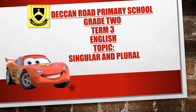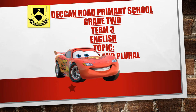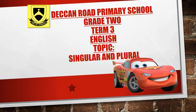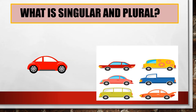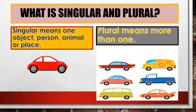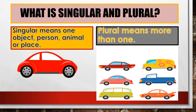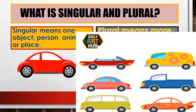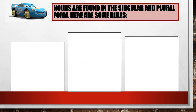Topic: singular and plural. What is singular and plural? Singular means one object, person, animal or place. Plural means more than one. Nouns are found in the singular and plural form.